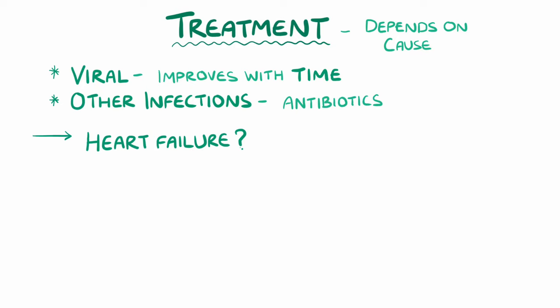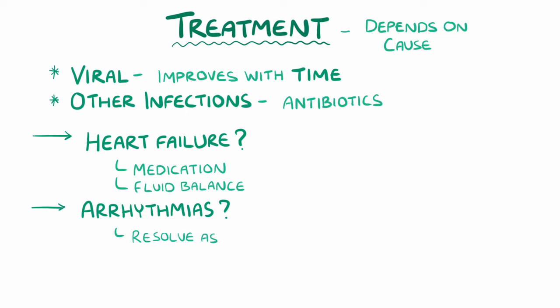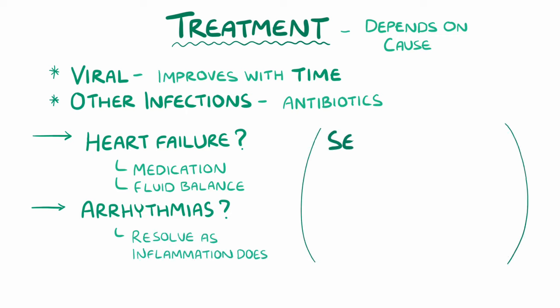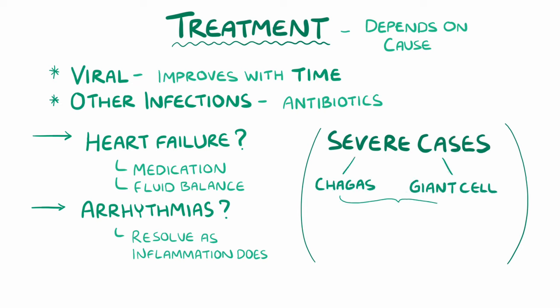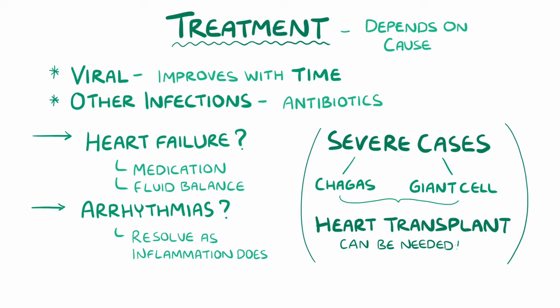If there are signs of heart failure, they are typically managed with medication and careful fluid balance. Arrhythmias usually resolve as the inflammation improves as well. Finally, in severe cases, like some cases of Chagas myocarditis and giant-cell myocarditis, a heart transplant may be needed if other treatments don't work.